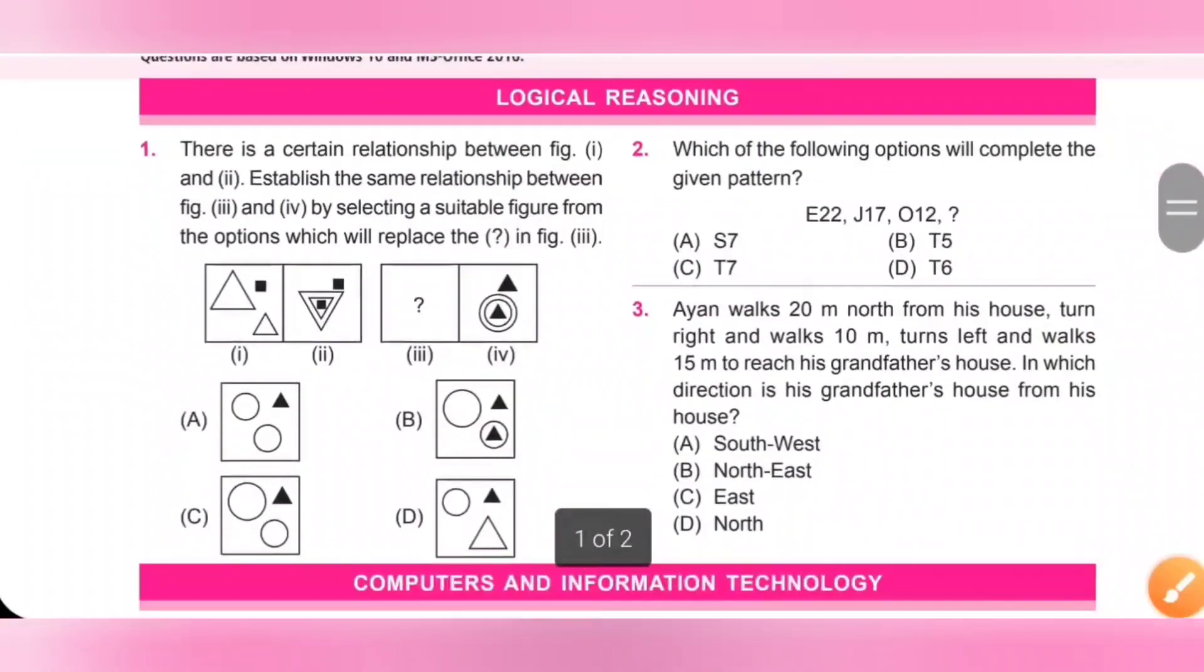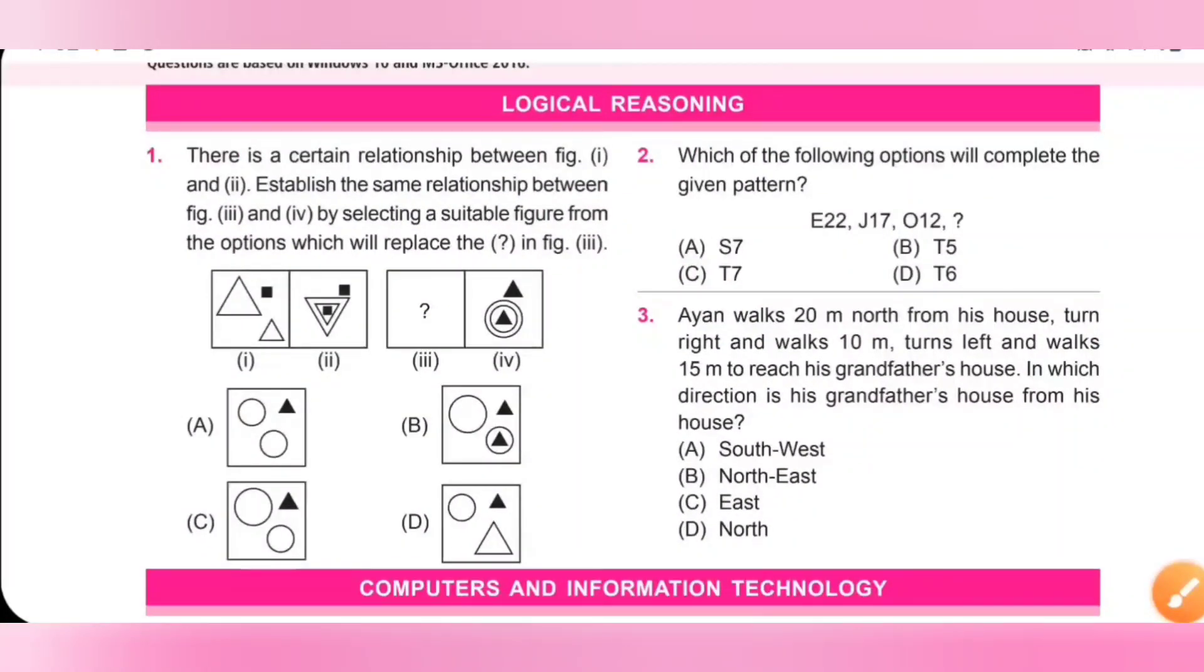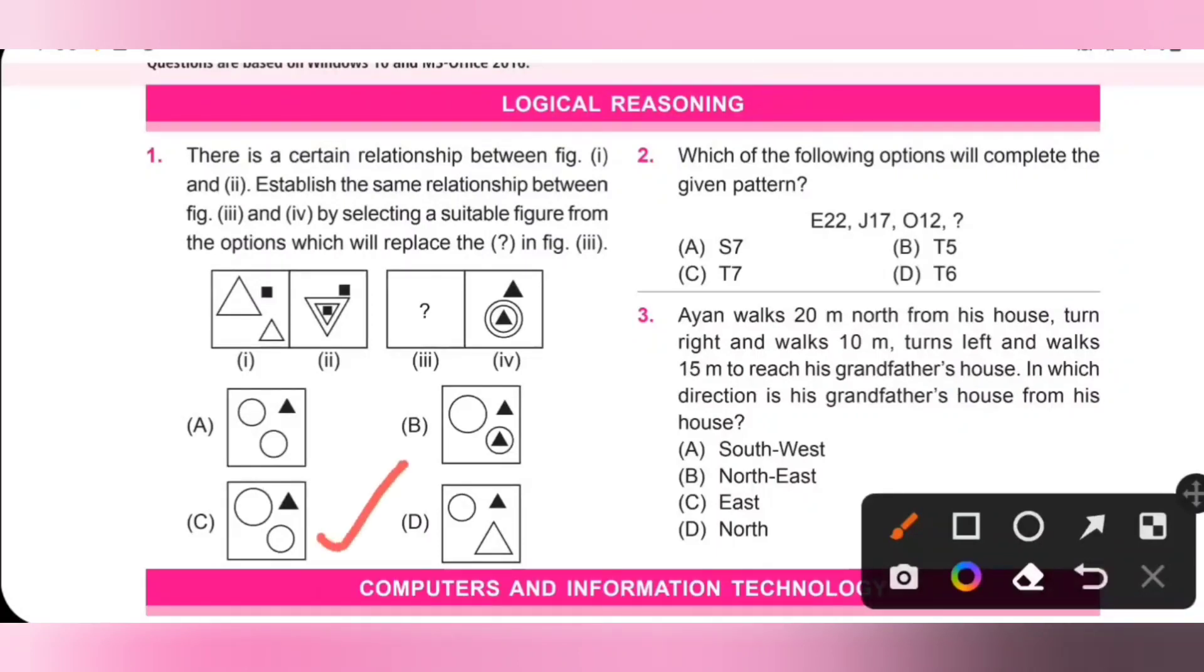Logical Reasoning. First one: There is a certain relationship between figure 1 and figure 2. Establish the same relationship between figure 3 and 4 by selecting a suitable figure from the options which will replace the question mark in figure 3. Please pause the video and check the relationship. All the shapes are of different sizes, so option C is the correct answer.